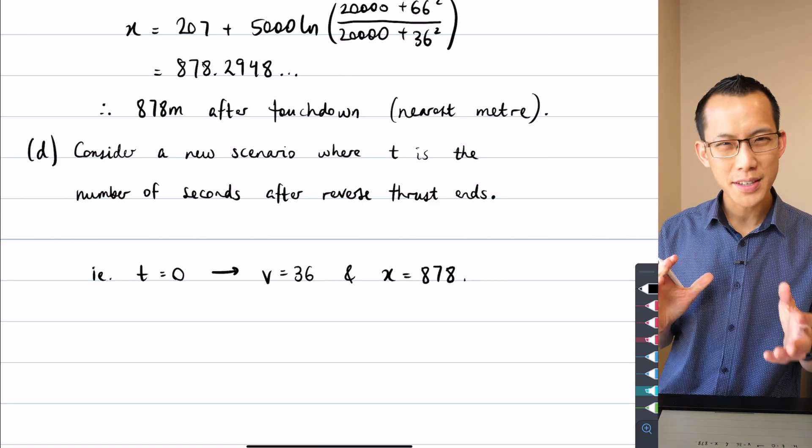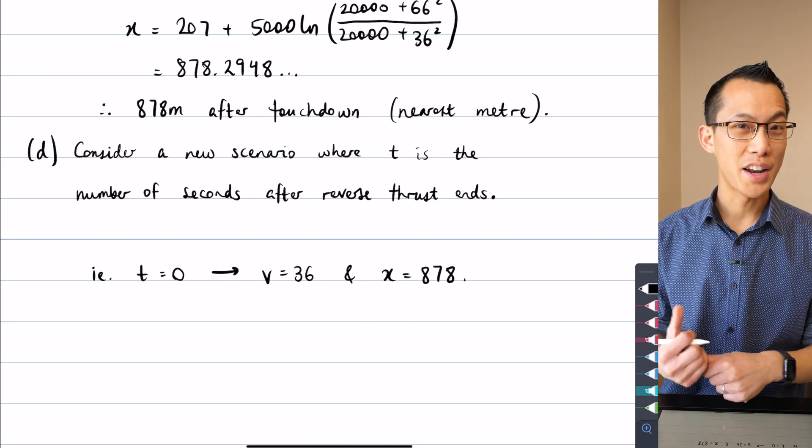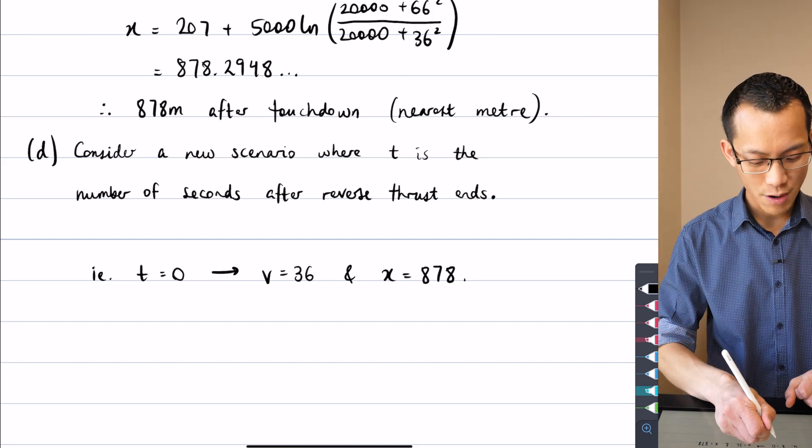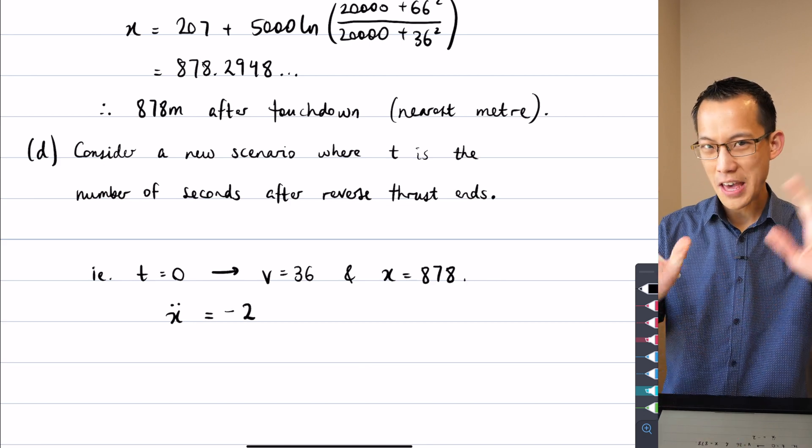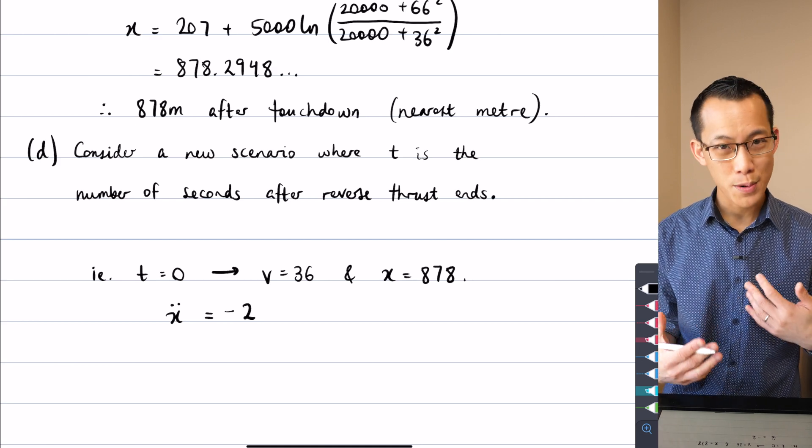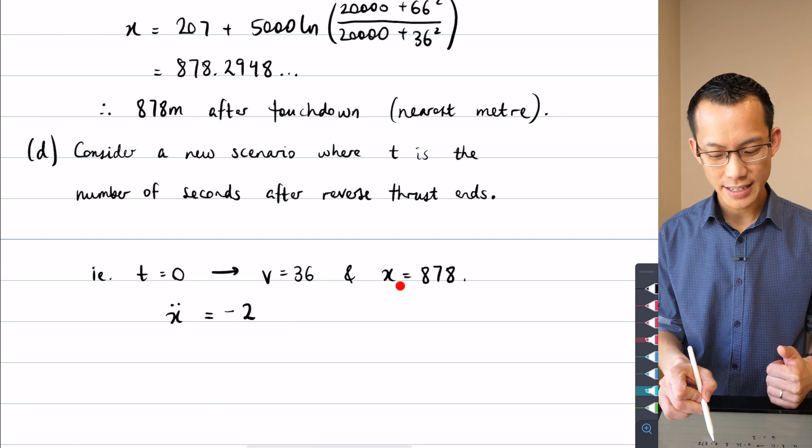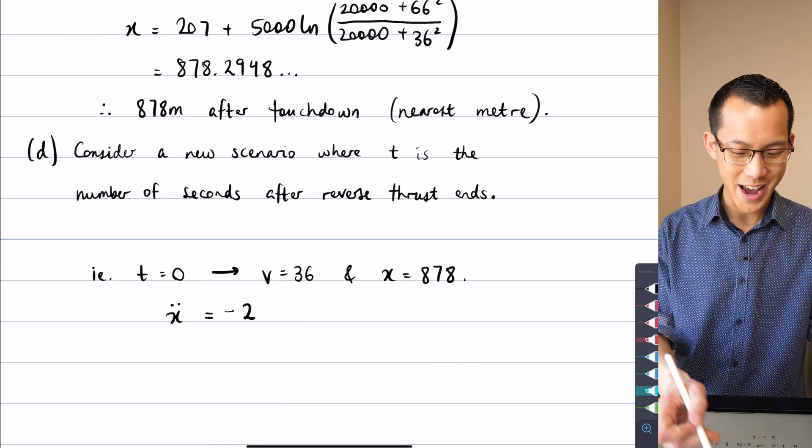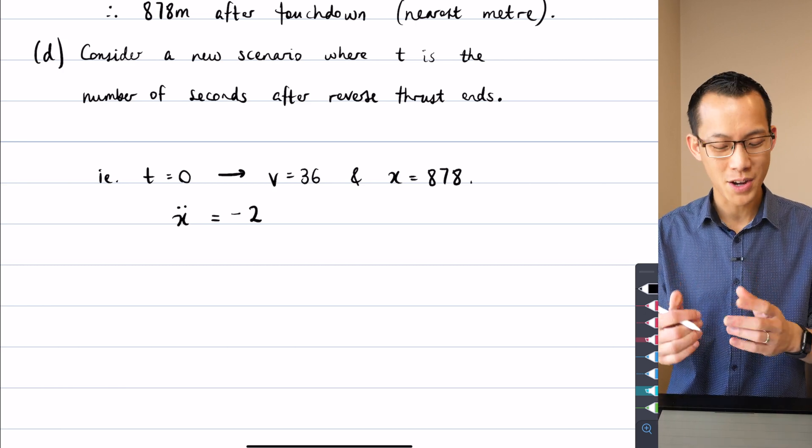That was the whole reason why we found that in part C. So reverse thrust is shut down at V equals 36. So my new time zero tells me that velocity equals 36. And similarly, I also know where this happens, not just how fast I'm going, but part C enabled me to find out that it's 878 meters after touchdown. So I've also got a value for X. It's 878, at least to the nearest meter. So now being that I'm back in sort of the same kind of force situation, the same kind of acceleration situation that I was back in part A, I can say, wait a second, I already know what X double dot is equal to.